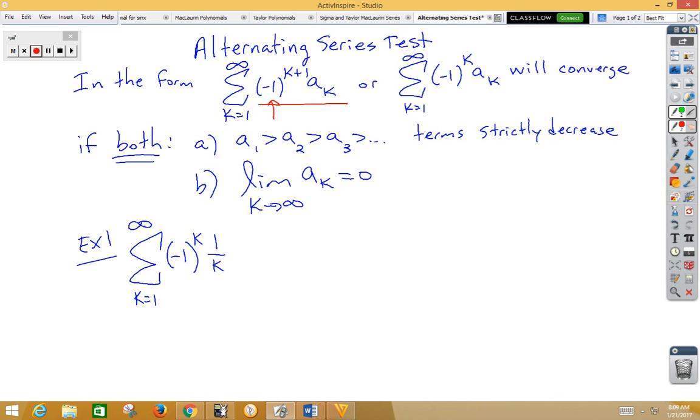This will converge when two things happen. First, you have to have a strictly decreasing series. Second is the limit has to always equal zero.